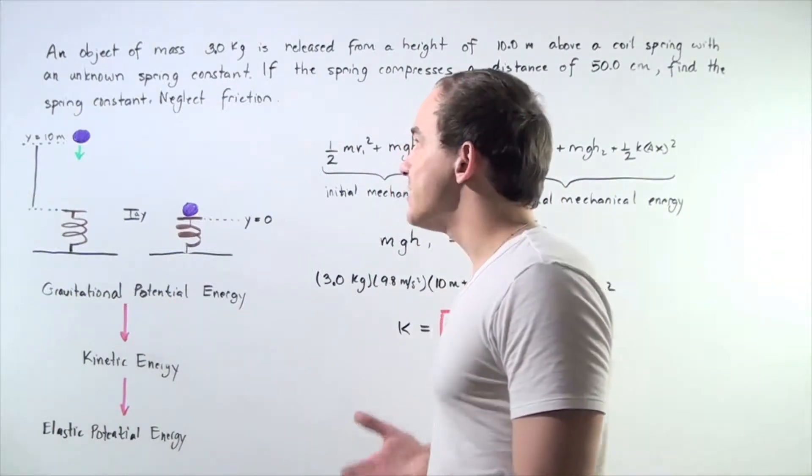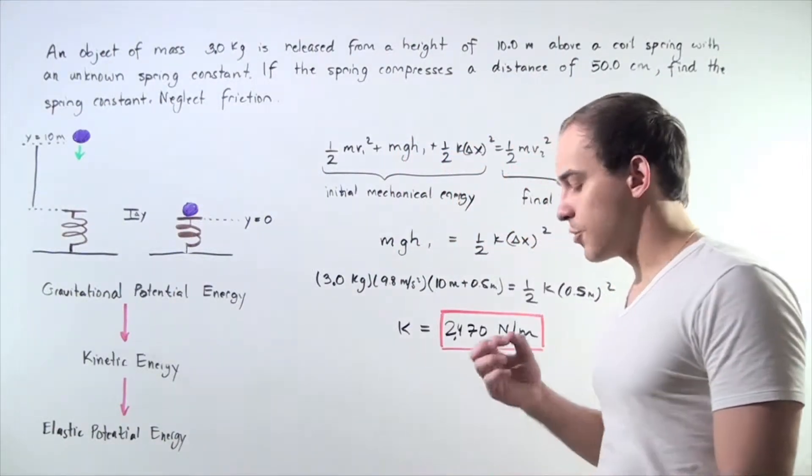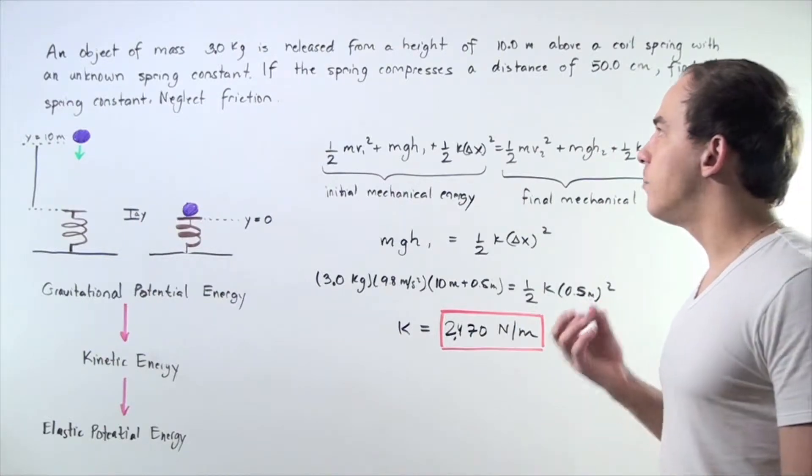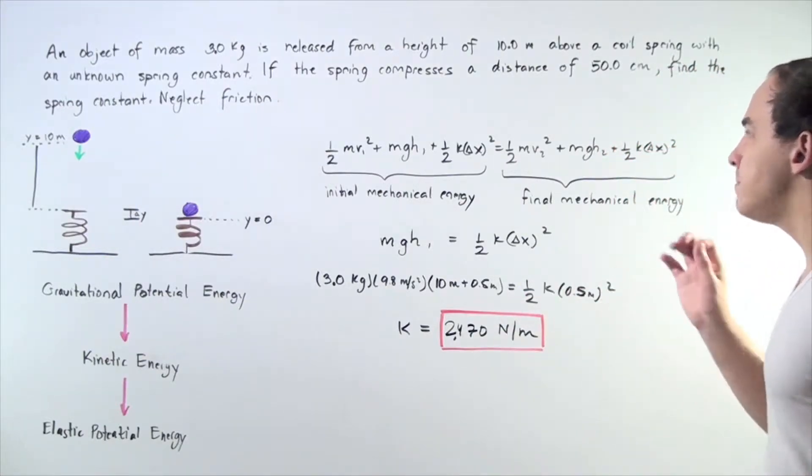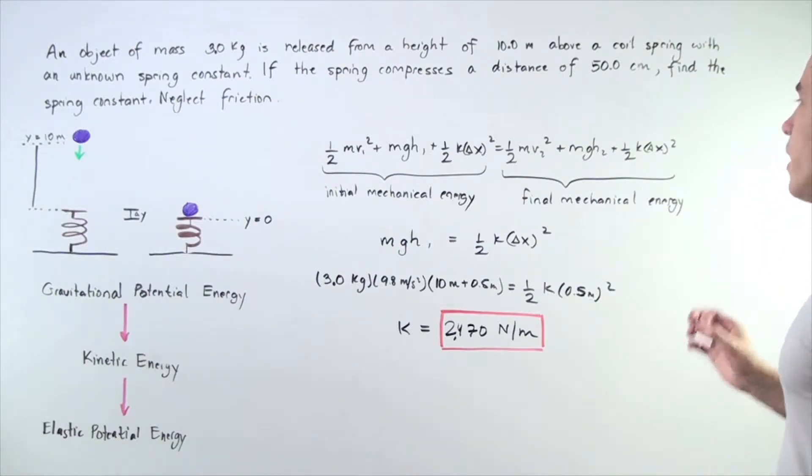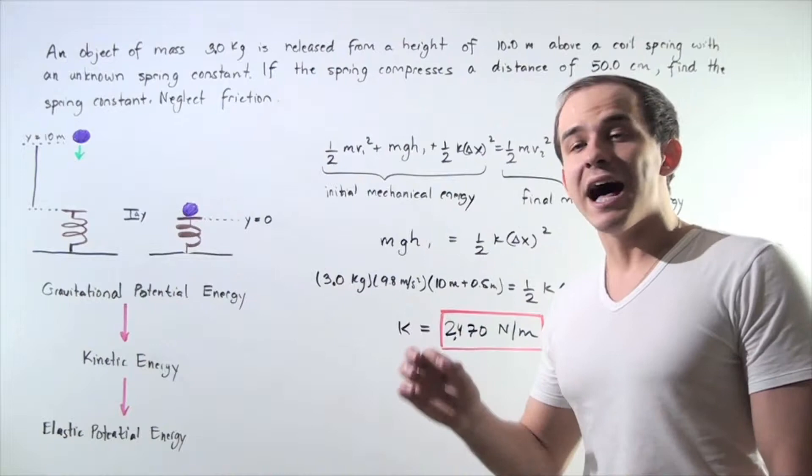Let's suppose that we have a certain object with mass 3 kilograms, a ball, and that object is released from a height of 10 meters above a coiled spring.